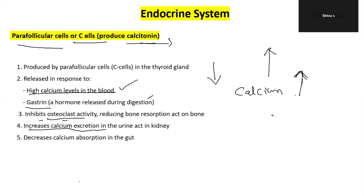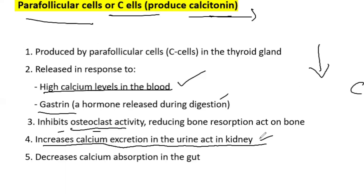Calcitonin increases calcium excretion through the urine via the kidneys. It also decreases calcium absorption from the gastrointestinal tract.